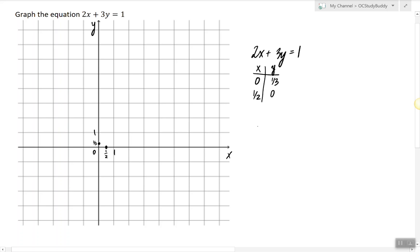Alternatively, what we can do is solve for y in this equation. We have (1 - 2x) divided by 3, and then rewrite that in slope-intercept form.